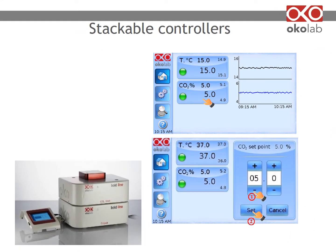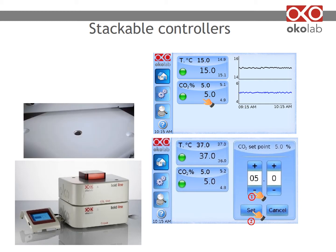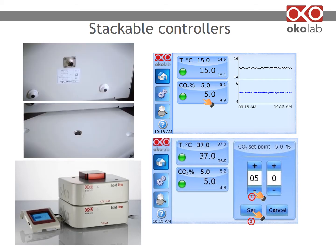To provide gas of the desired concentration, you can use an OcoLab digital gas controller. Our controllers are integrated through cable-less connections — stack them on top of each other and the connection is established. A single touchscreen interface is used for a stack of controllers. Setting the desired concentration is intuitive: press on the CO2 tab and adjust by pressing plus or minus, then set.